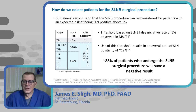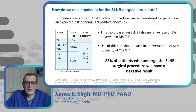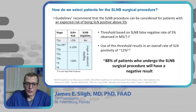How do we select patients for sentinel lymph node biopsy? NCCN recommends sentinel lymph node biopsy when overall positivity is greater than 5%. For T1A tumors — non-ulcerated tumors less than 0.8 millimeters in depth — sentinel lymph node biopsy yield falls beneath the 5% threshold, which is why we typically do not consider T1A patients for this procedure.